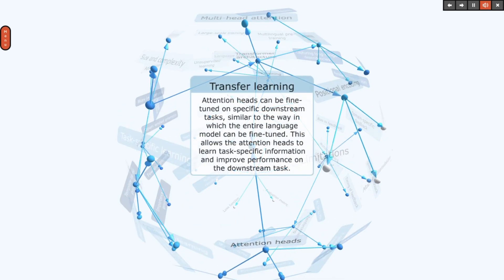Attention heads can be fine-tuned on specific downstream tasks, similar to the way in which the entire language model can be fine-tuned. This allows the attention heads to learn task-specific information and improve performance on the downstream task.